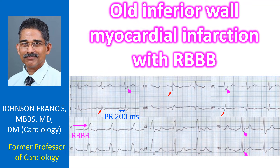RBBB is unlikely to be due to the inferior wall infarction, as the coronary territory which supplies the inferior wall is less likely to cause RBBB. Inferior wall infarction is associated with suprahisian blocks, while infrahisian blocks are a feature of anterior wall infarction.